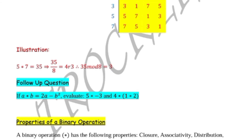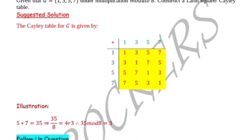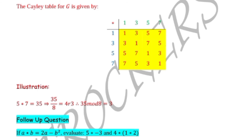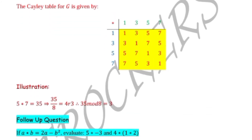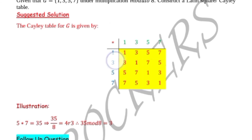8 goes into 32 four times, then remainder 3 to give us 35. Therefore 35 mod 8 equals 3. That's how 5 star 7 gives us 3. Another example: 3 star 5 gives us 7, because 3 times 5 is 15, and 15 divided by 8 is 1 remainder 7.